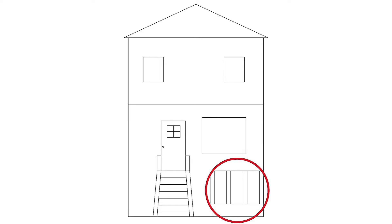This shows where the cripple wall is located on the house. Notice where the top of the stairs are. This is where the floor is located. So between the foundation and this floor, there's a short wall called a cripple wall. This is the area where all retrofitting takes place.